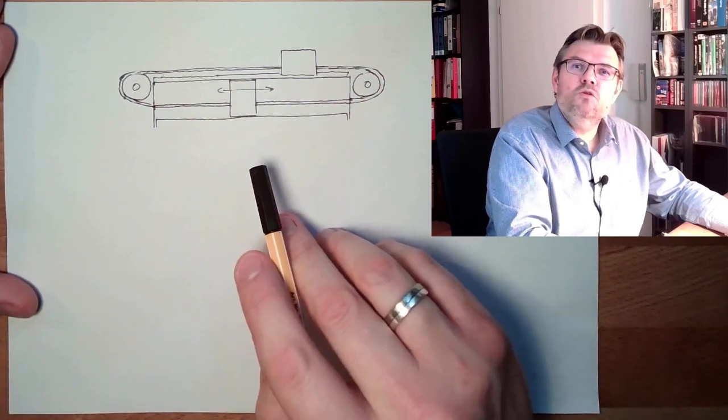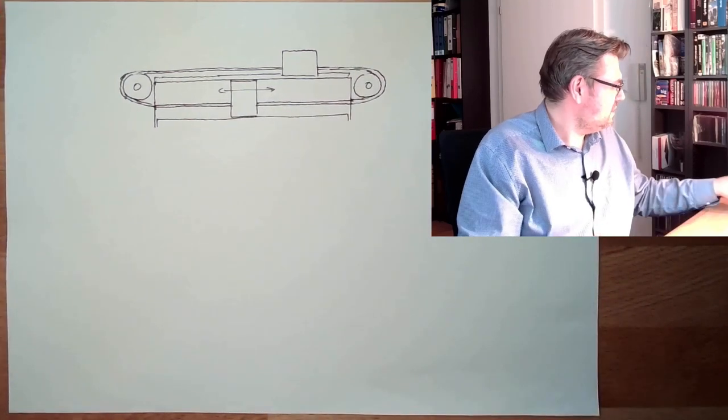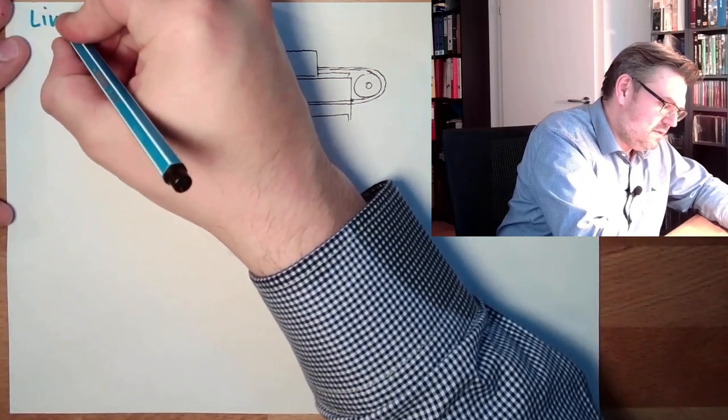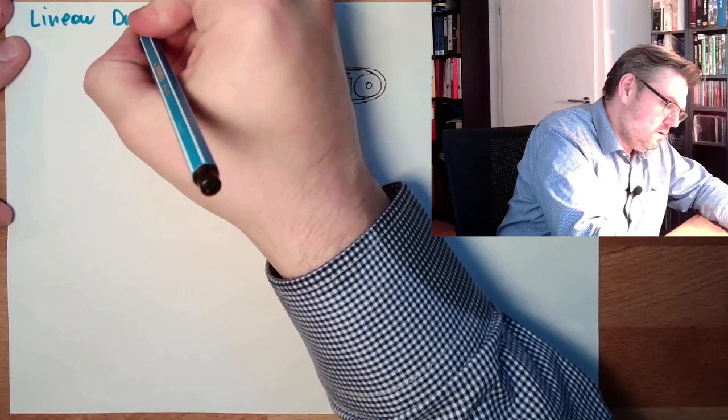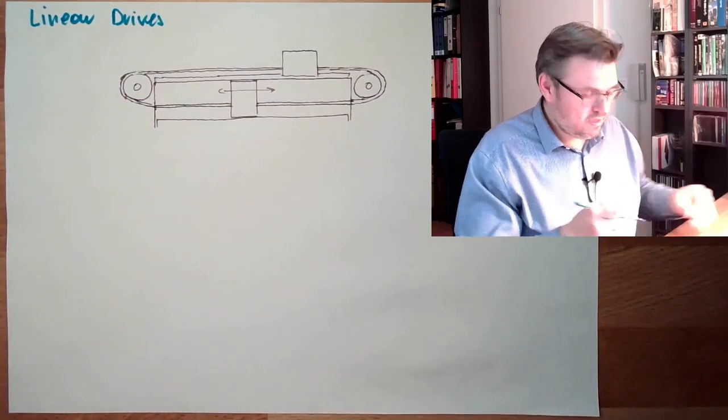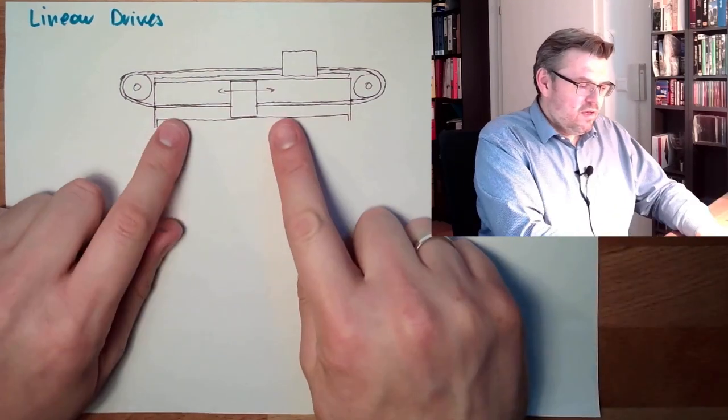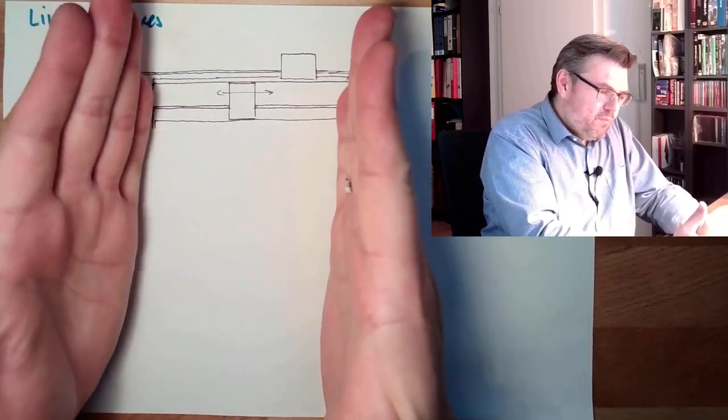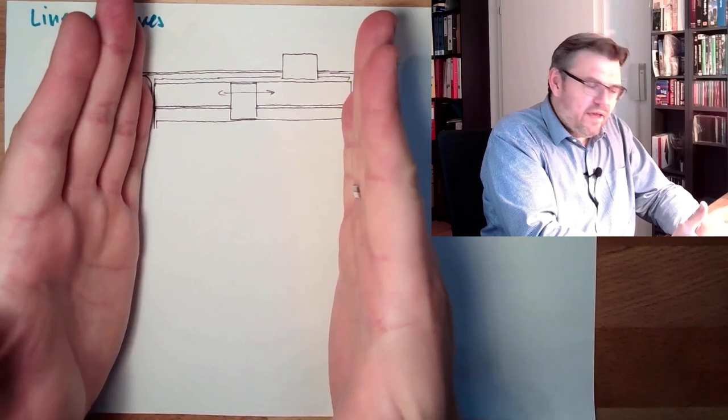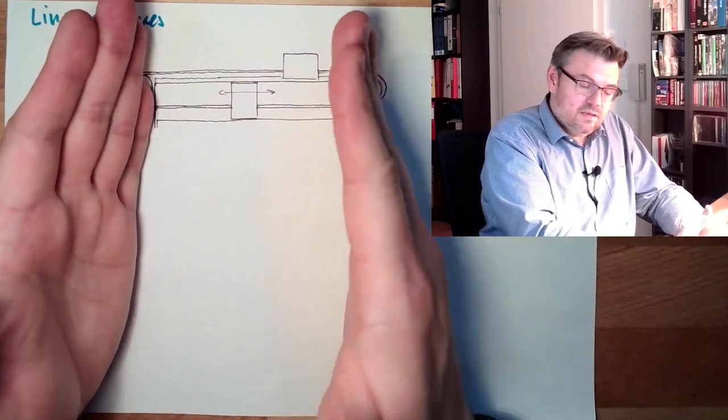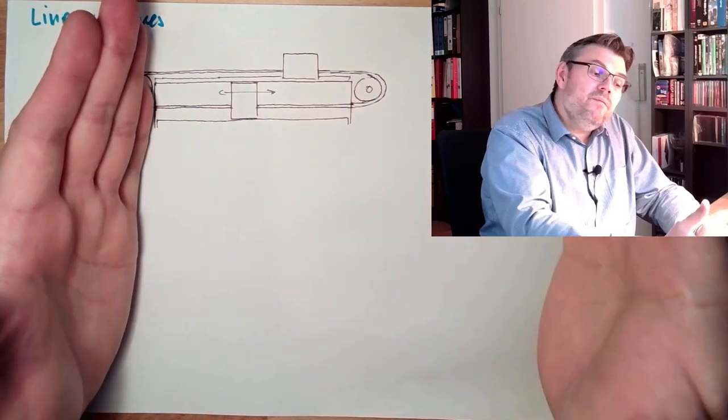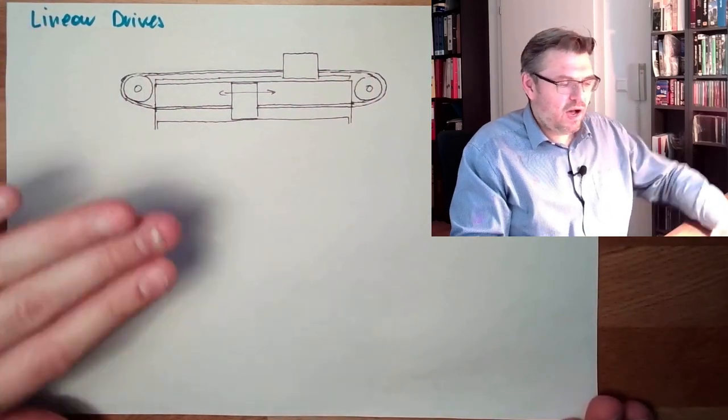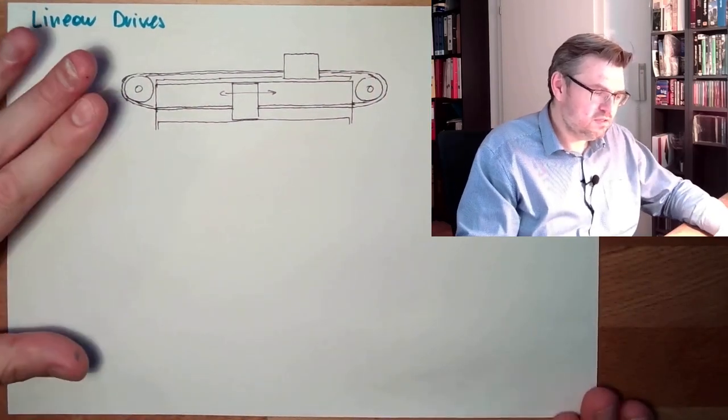Those things are also called linear drives. These are rodless cylinders. Another big benefit of such things is that, you know, it's shorter. The movement way is already the length of the cylinder. In a standard cylinder, you need the length of the cylinder and traveling more. So there are movements possible up to 10 meters.